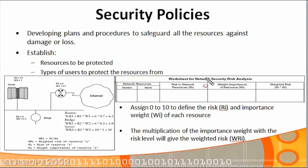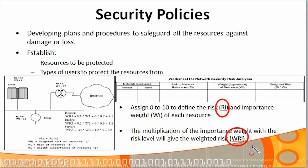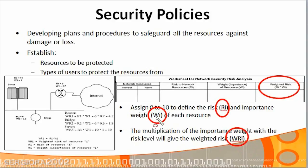After that, you assign another number to each resource called the importance, or WI — representing how important that resource is to you or the organization. An important server would receive a higher number on the same 0 to 10 scale. Once you have these two values, RI and WI, you multiply them together to get the Weighted Risk Index, or WRI.